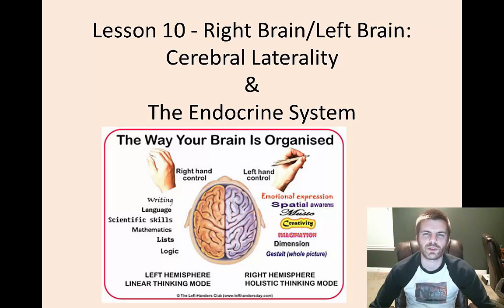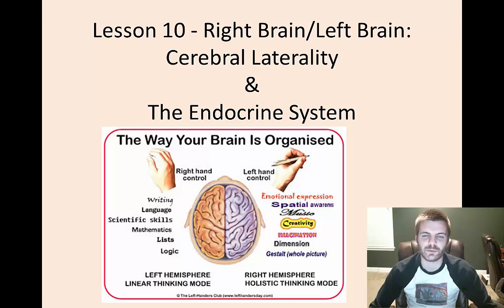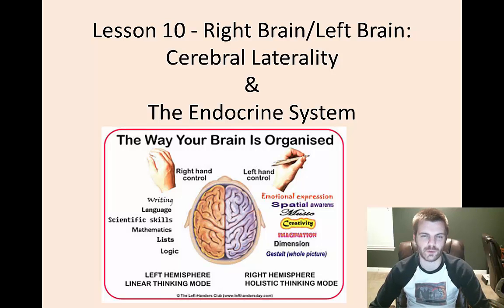Welcome back to another video for the AP Psychology course. This is lesson number 10, looking at the left and right brain hemispheres and their specializations, and also looking at the endocrine system. You can go ahead and get a quick glimpse at some of the specialties and the way your brain is organized by looking at this picture, so feel free to pause and take a look.